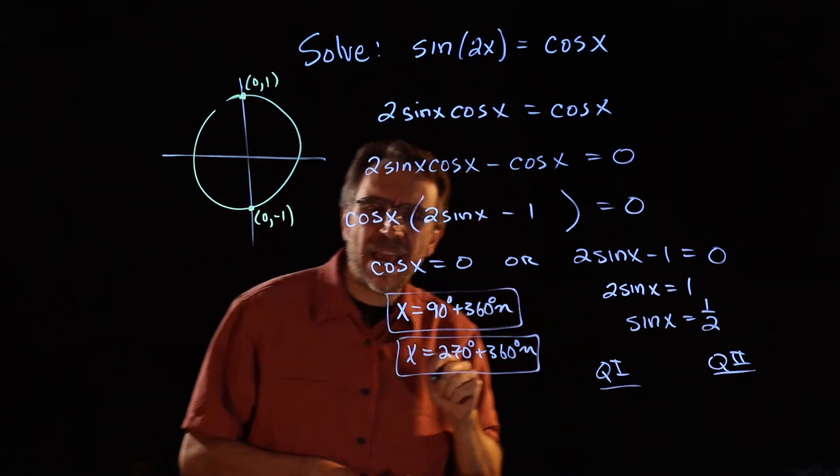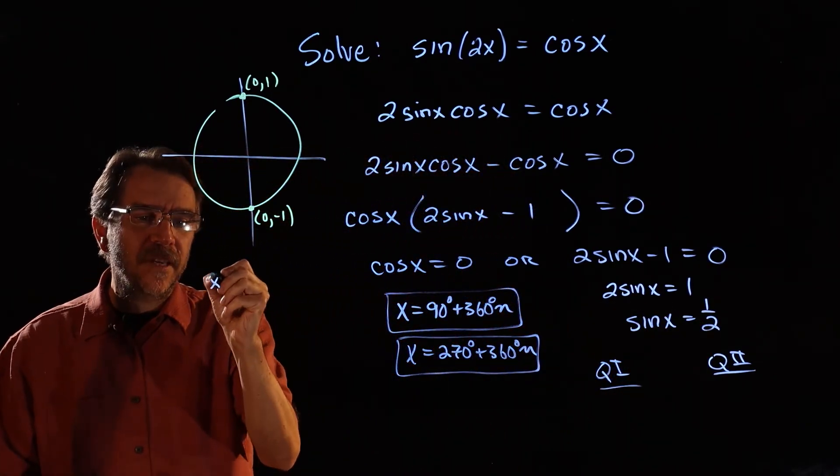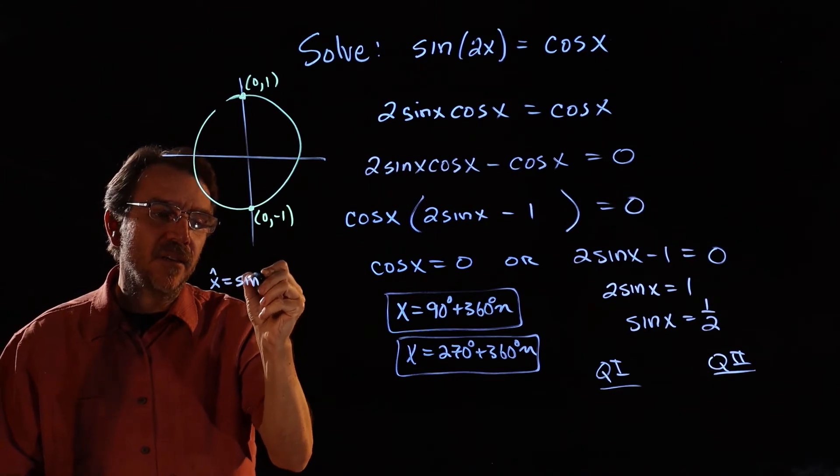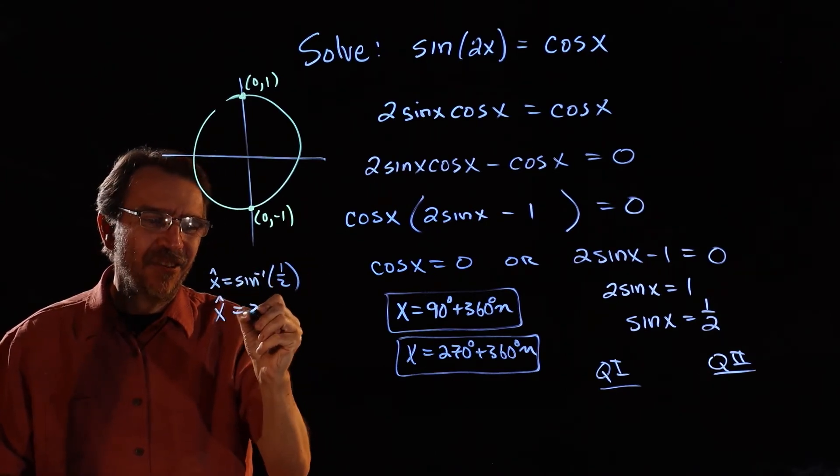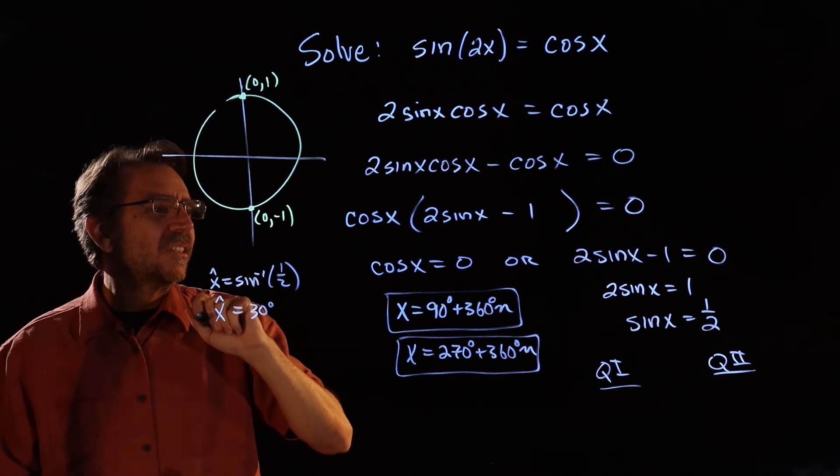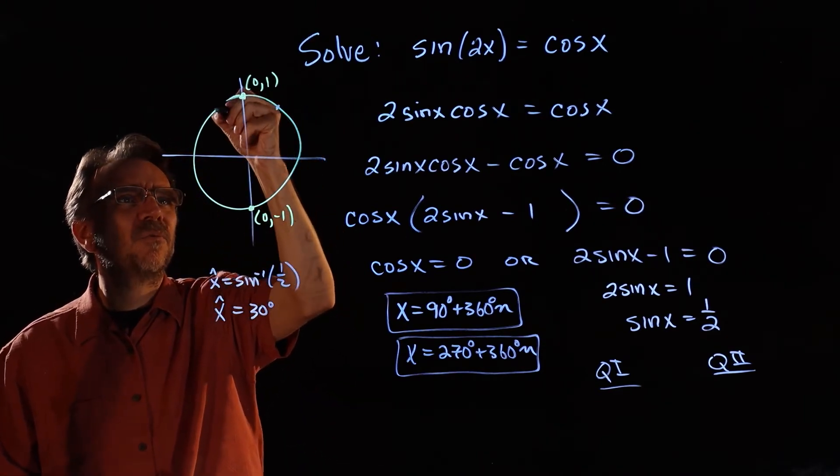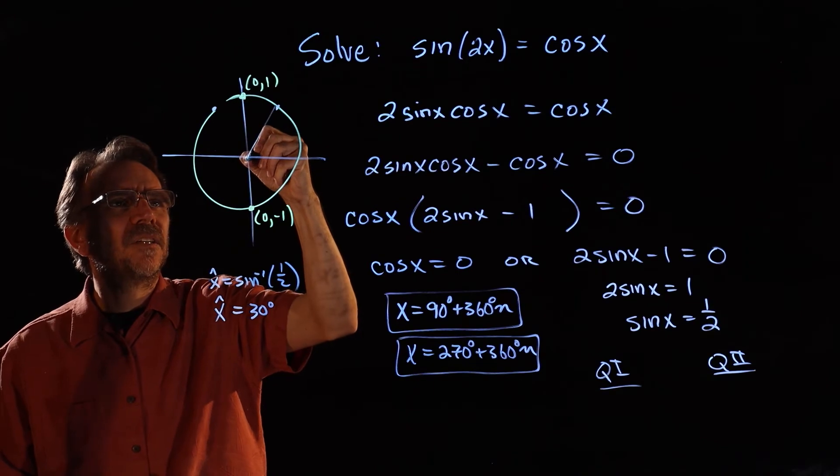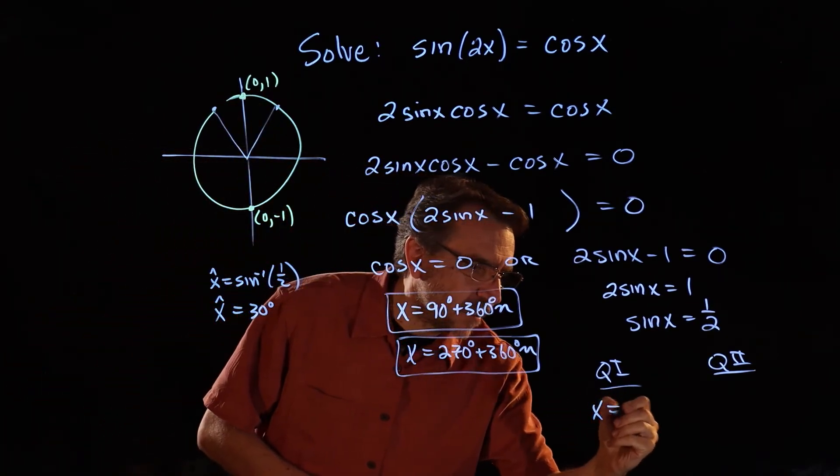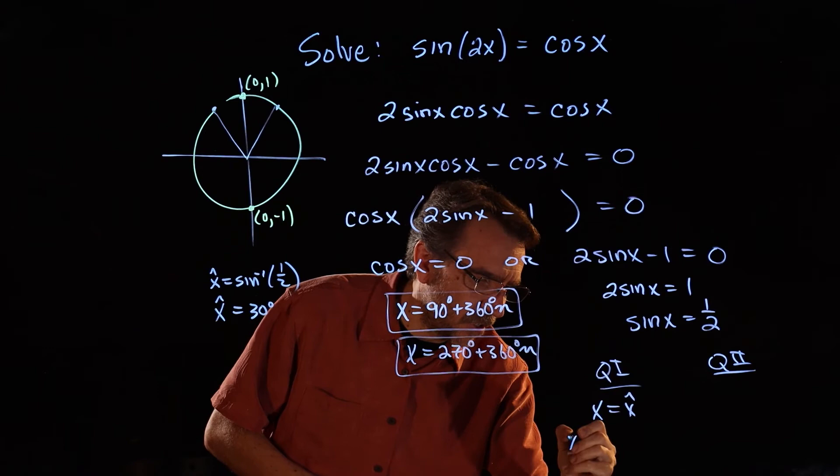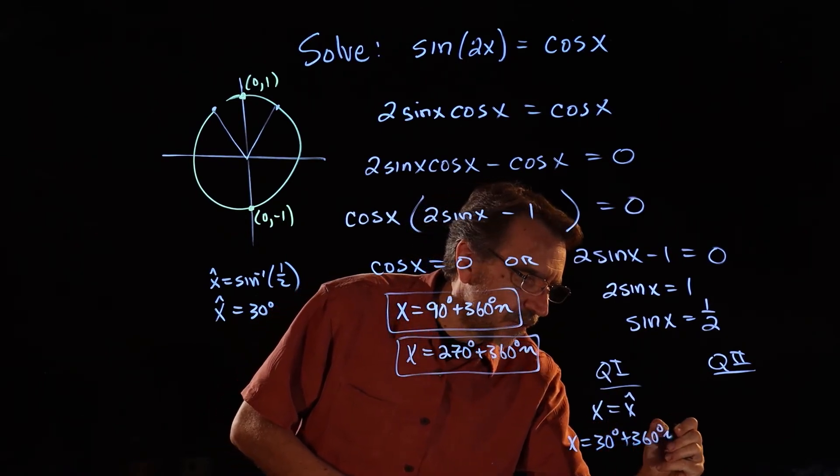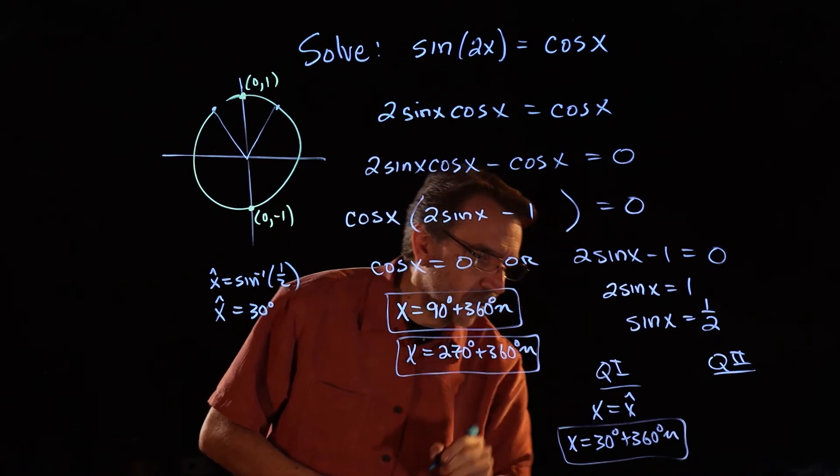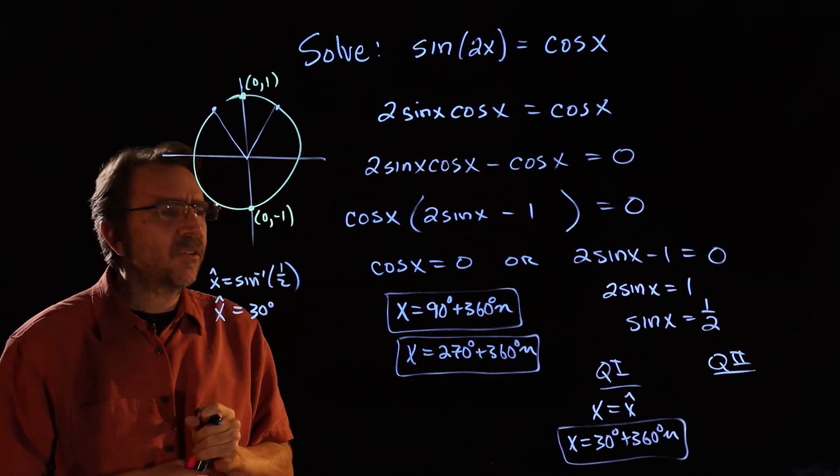Now for sine x equaling 1 half, we know the reference angle is going to be sine inverse of 1 half, which is 30 degrees. So sine equaling 1 half is going to be in quadrant 1 and quadrant 2. So in quadrant 1, x equals 30 degrees plus 360 degrees times n. There's all solutions coterminal in quadrant 1.